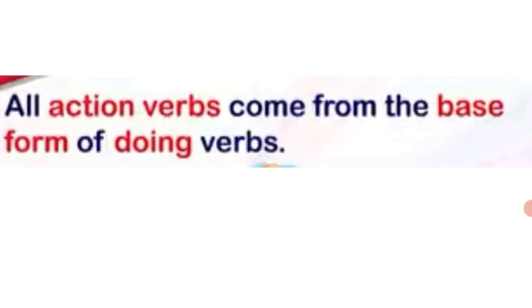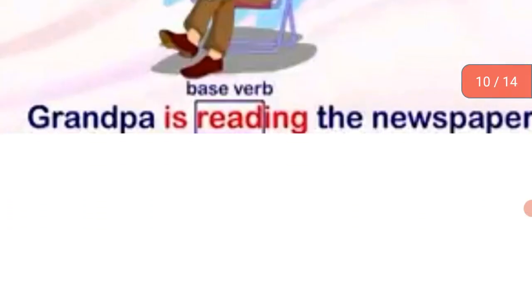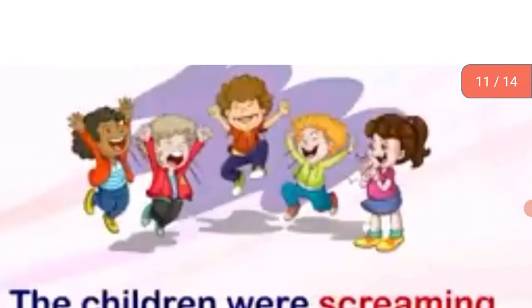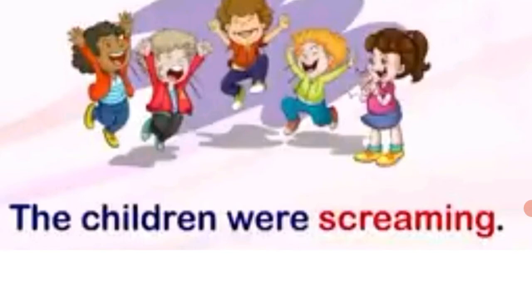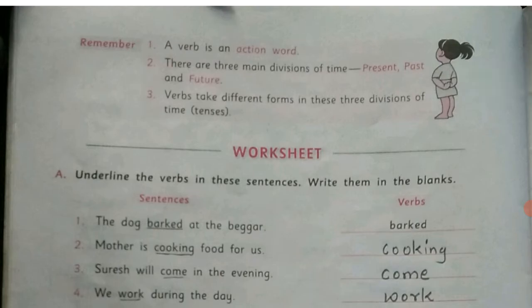All action verbs come from the base form of doing verbs. For example: 'Grandpa is reading the newspaper' — the base verb is 'read'. 'The children were screaming' — base is 'scream'. So these were a few examples.